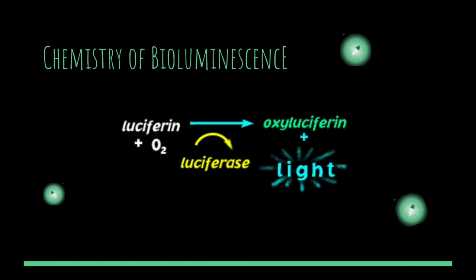Although there is variation across different species, the chemical reaction that produces light can be simplified to one general process. Typically, a pigment called luciferin in the presence of oxygen is oxidized in a reaction catalyzed by an enzyme called luciferase. The oxidation of luciferin producing oxyluciferin releases energy in the form of visible light. Co-factors such as calcium and ATP aid luciferase in catalyzing the reaction of luciferin with oxygen.